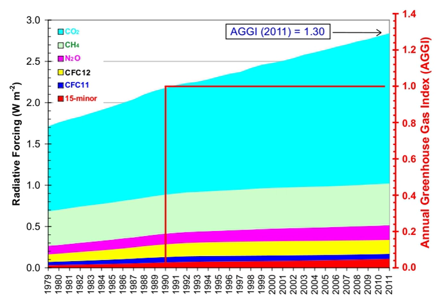Carbon dioxide has a variable atmospheric lifetime and cannot be specified precisely. The atmospheric lifetime of CO2 is estimated on the order of 30 to 95 years. This figure accounts for CO2 molecules being removed from the atmosphere by mixing into the ocean, photosynthesis, and other processes. However, this excludes the balancing fluxes of CO2 into the atmosphere from the geological reservoirs, which have slower characteristic rates.